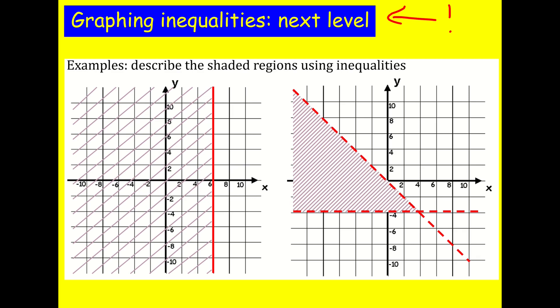The first thing to do is think about the equation of the line. This line here is x equals six. Now it's everything to the left of this, so the inequality is not x equals six, but x is less than or equal to six. Notice we have a solid line, so you include the less than or equal to — the point can actually be on the line. And that's our answer.